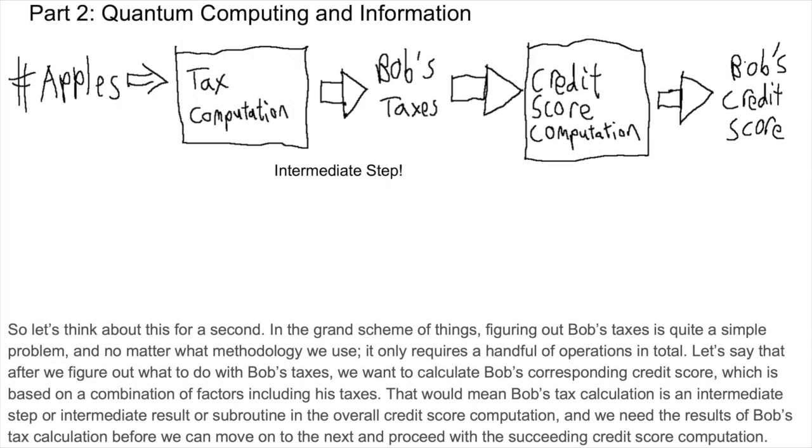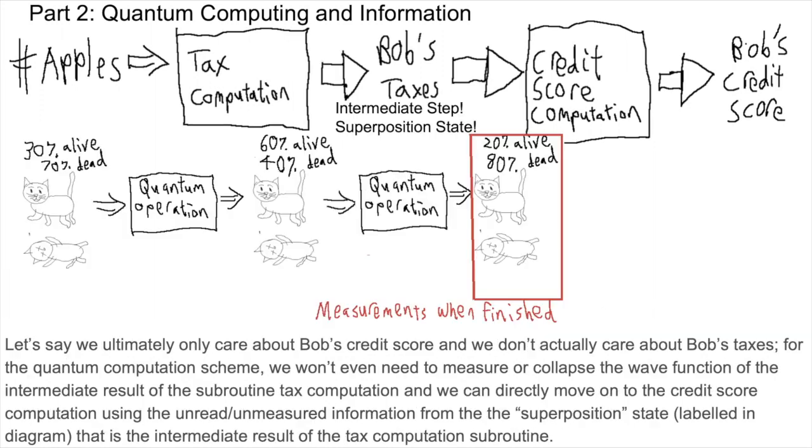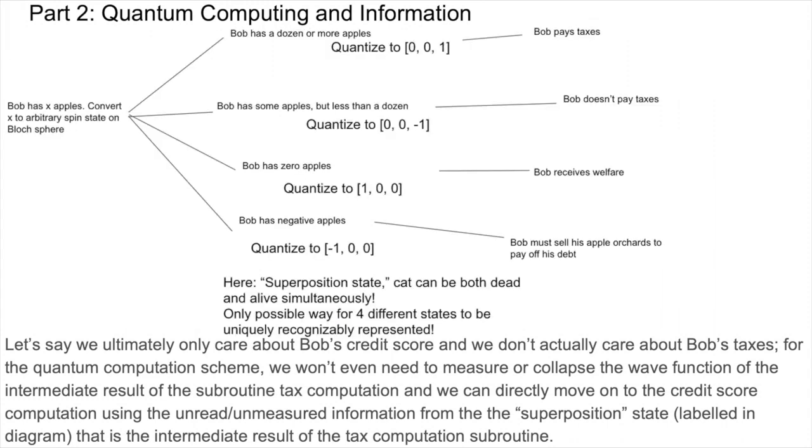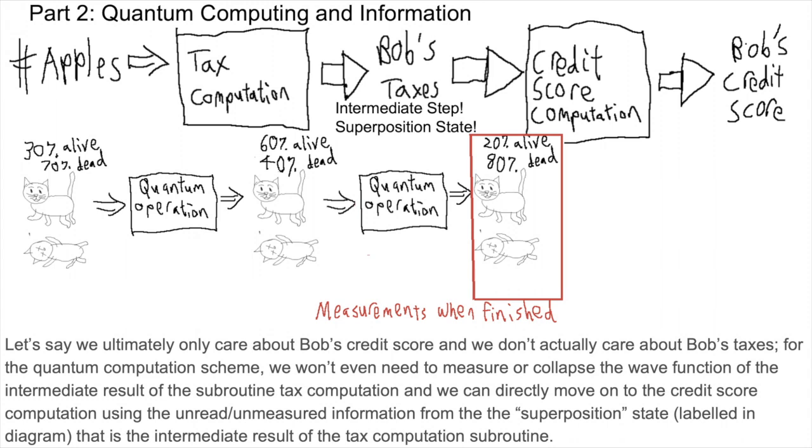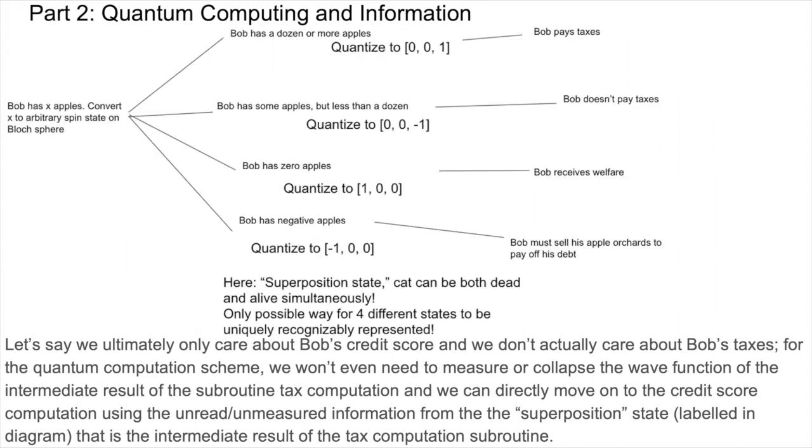Let's say that after we figure out what to do with Bob's taxes, we want to calculate Bob's corresponding credit score, which is based on a combination of factors including his taxes. That would mean Bob's tax calculation is an intermediate step or intermediate result or subroutine in the overall credit score computation, and we need the results of Bob's tax calculation before we can move on to the next and proceed with the succeeding credit score computation. Let's say we ultimately only care about Bob's credit score, and we don't actually care about Bob's taxes. For the quantum computation scheme, we won't even need to measure or collapse the wave function of the intermediate result of the subroutine tax computation, and we can directly move on to the credit score computation using the unread, unmeasured information from the superposition state labeled in the diagram that is the intermediate result of the tax computation subroutine.